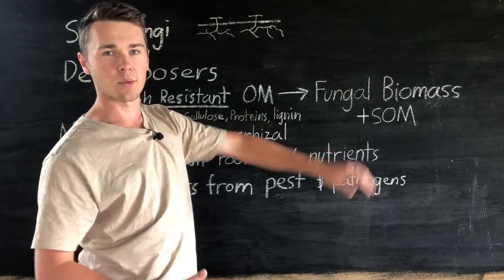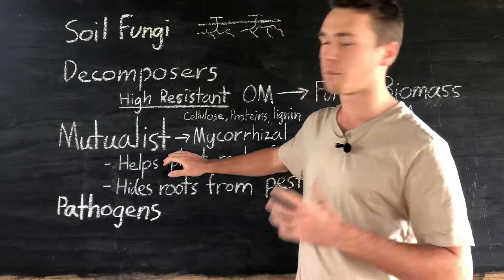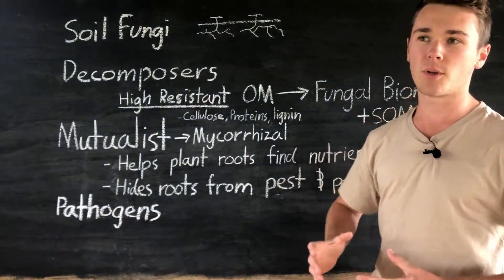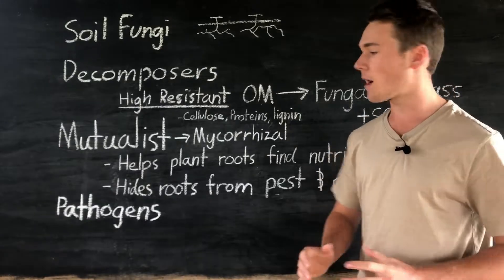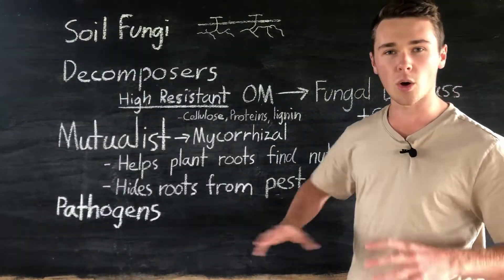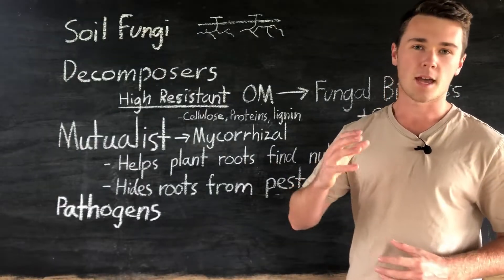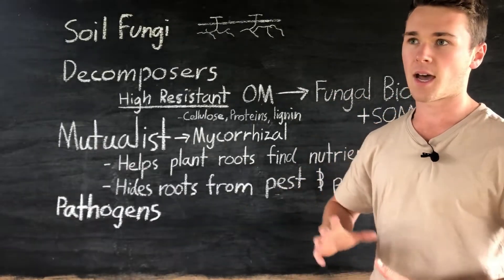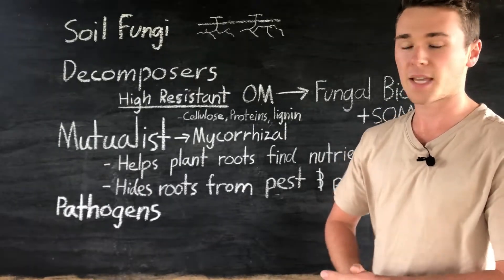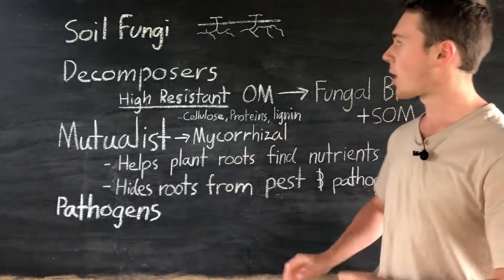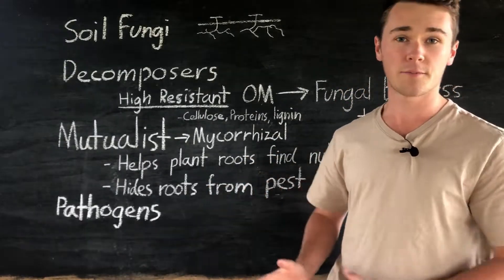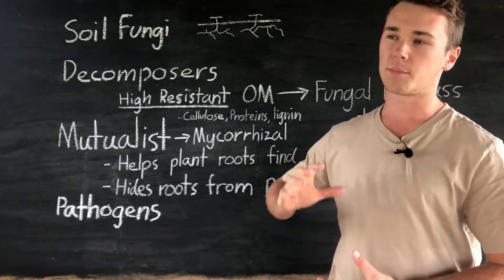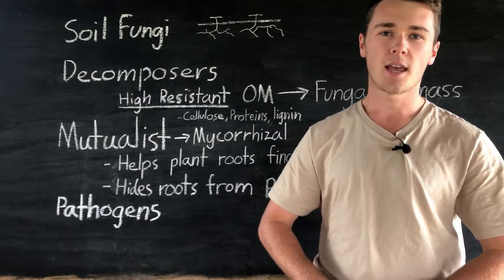The next group are our mutualist fungi. An example of mutualist fungi are mycorrhizal fungi. Everyone loves these because they support our plants so much. Firstly, they help our plants find nutrients, and secondly, they actually hide plant roots from pathogens and pests by forming around the roots. These fungi grow with our plants, so both the plant and the fungi benefit from the relationship. This is a really important function for increasing plant uptake of nutrients and protecting plants from disease and pests.